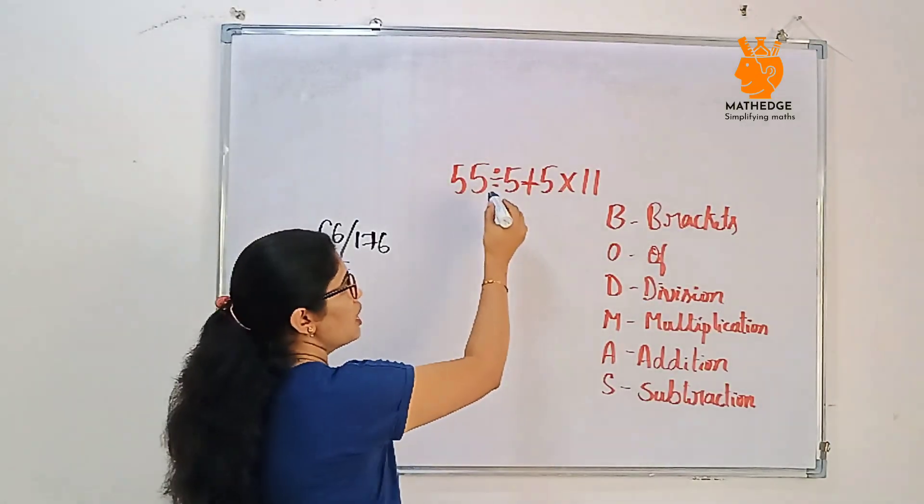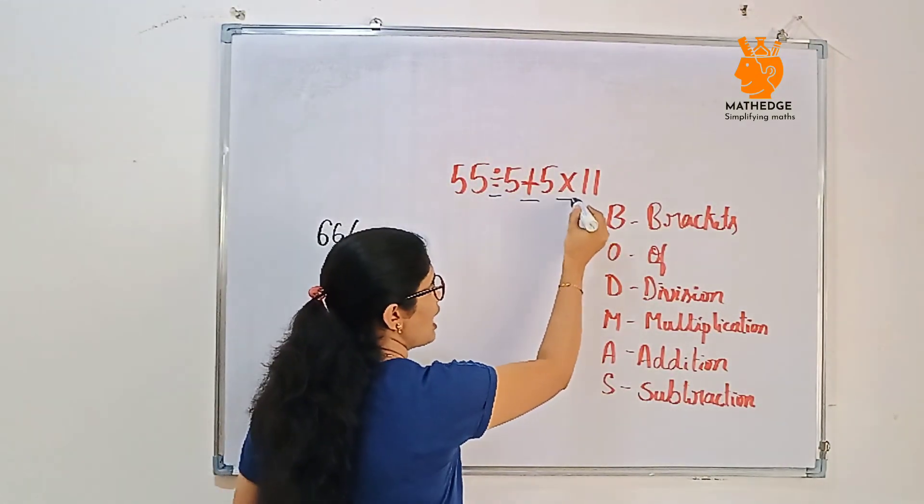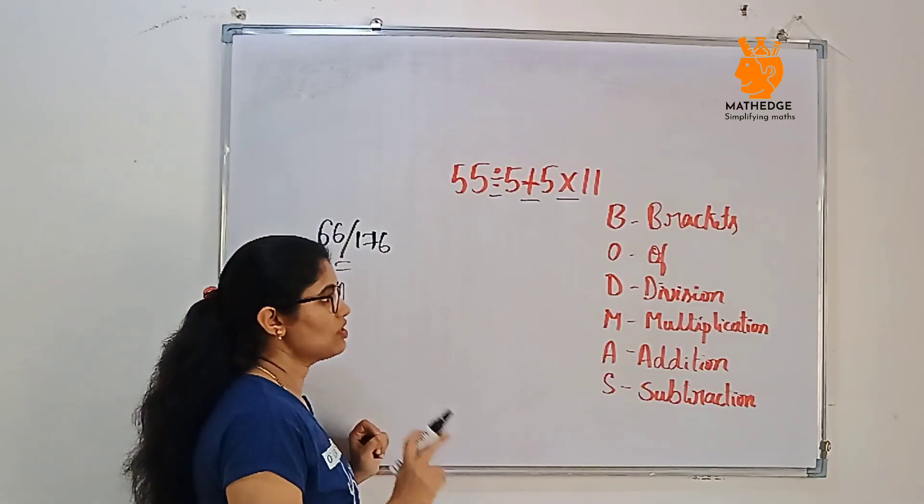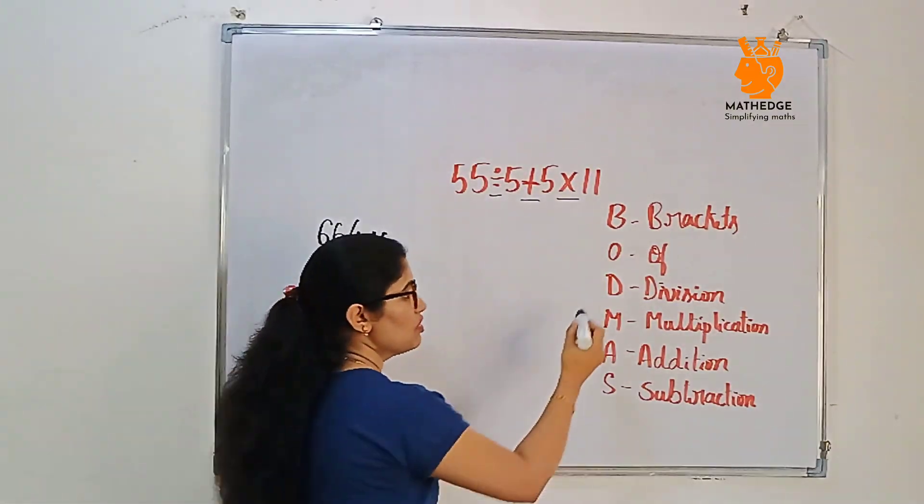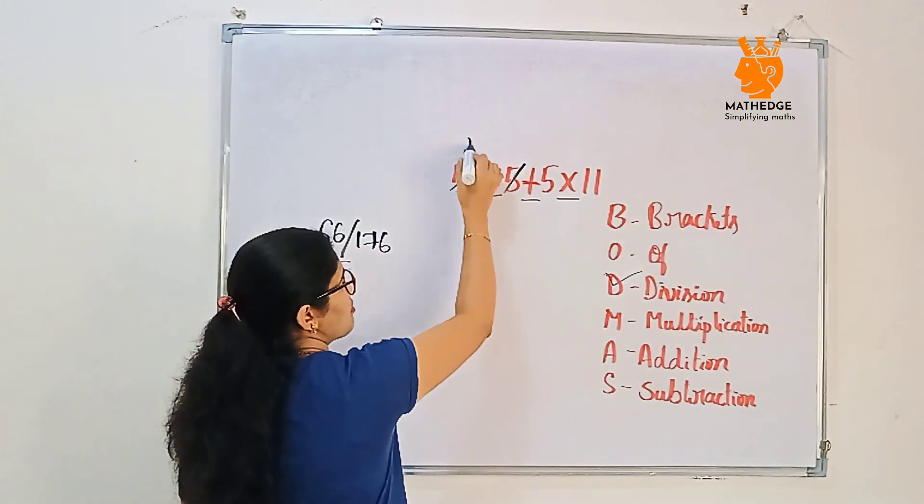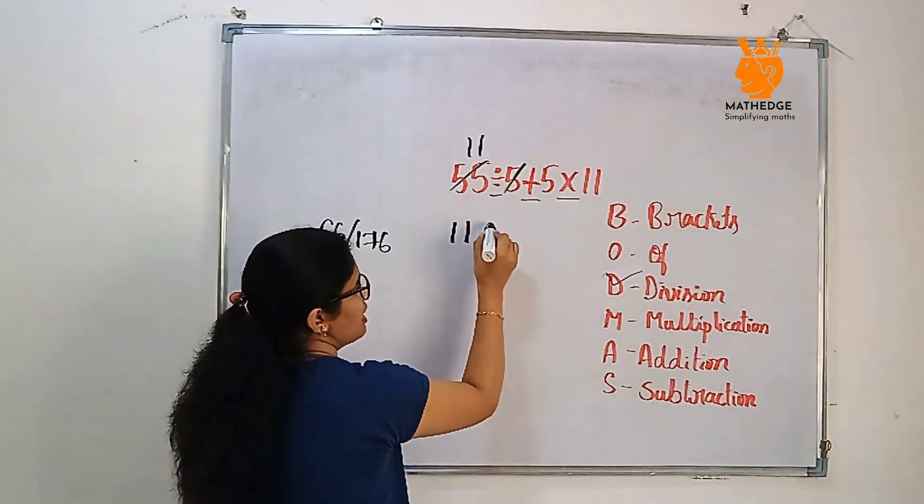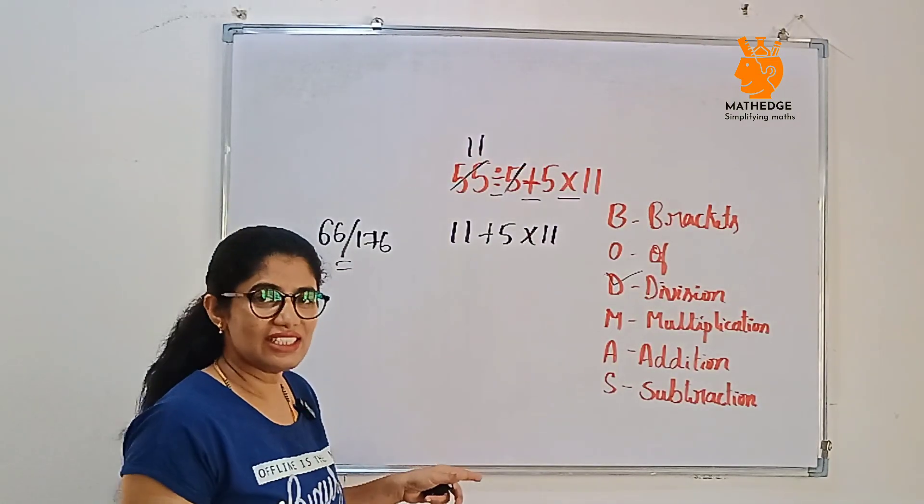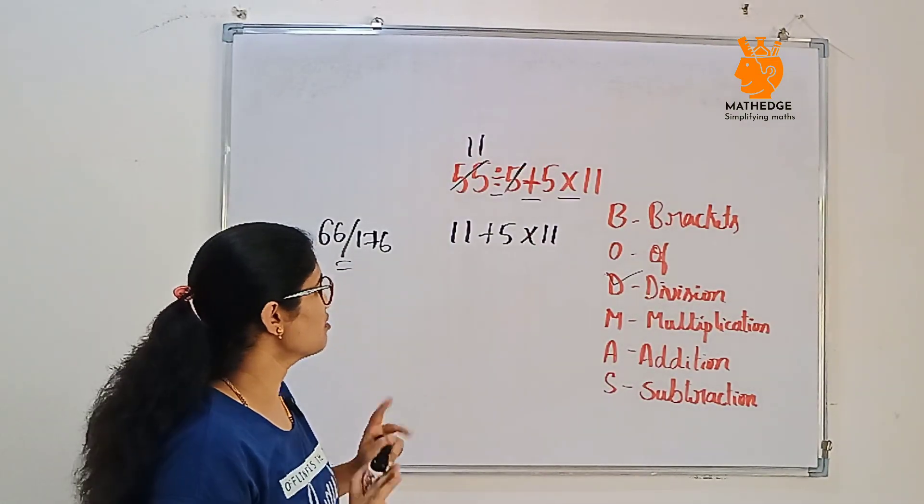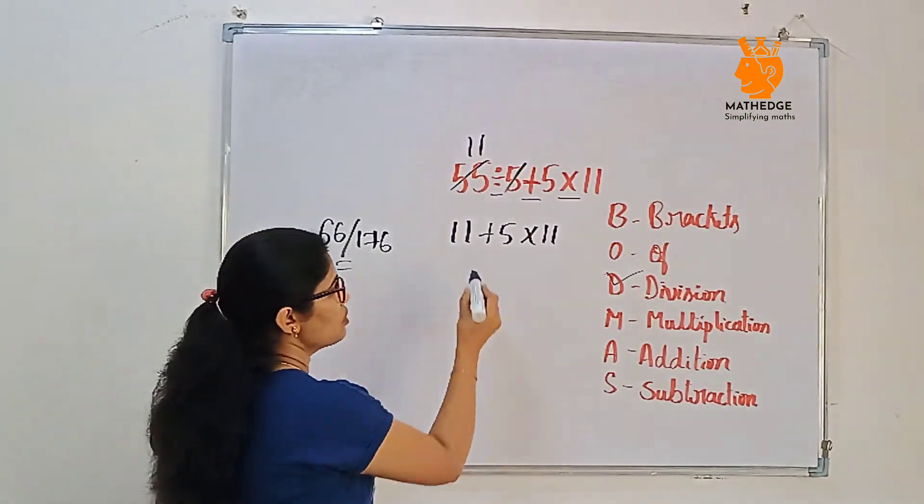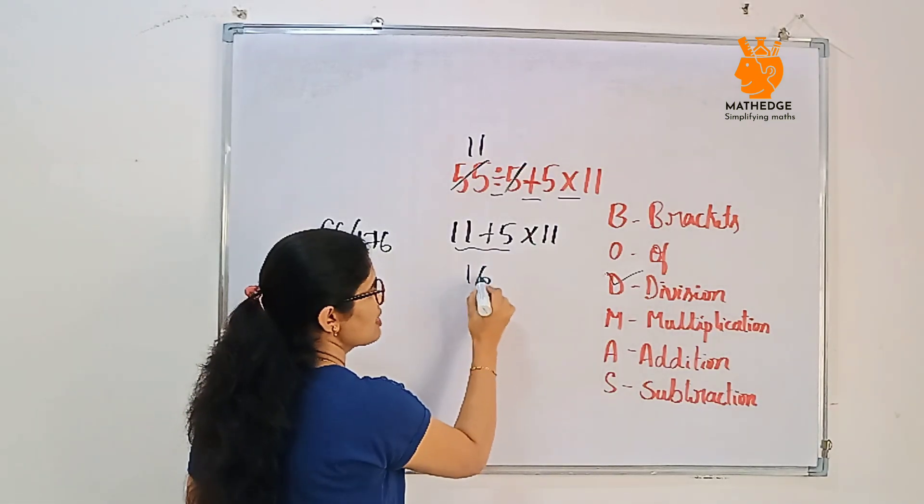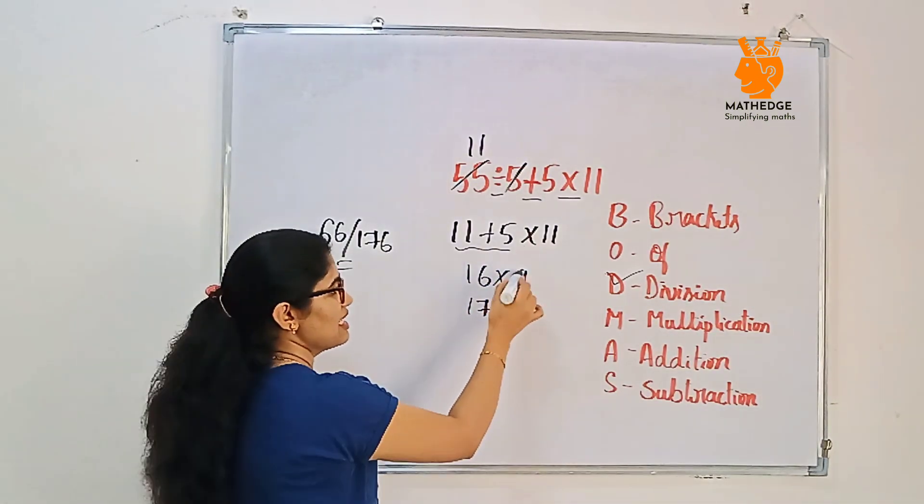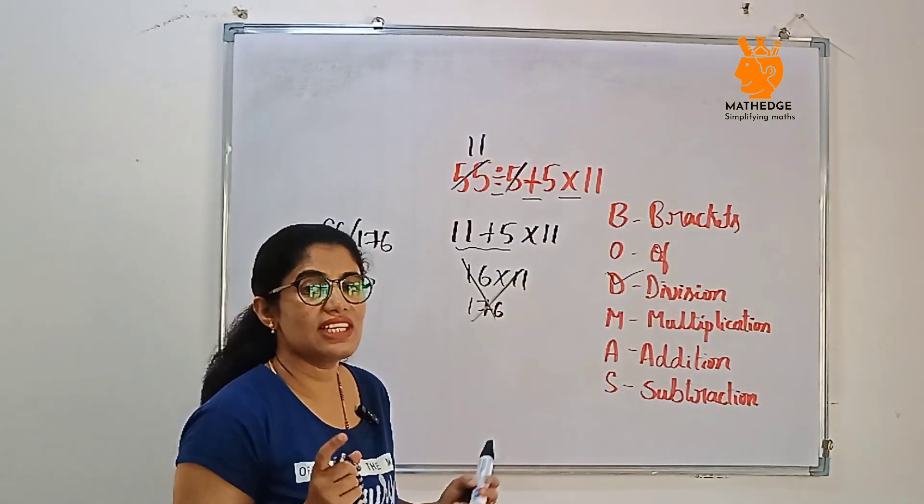Here we have multiplication, addition and division. All three we have. First according to BODMAS, first we should go with division. 55÷5 is 11. So 11+5×11. Here is the tricky part. Most of them will do wrong. What they will do? They will just add this. If you get 16×11, then you will get 176. No, this is wrong.